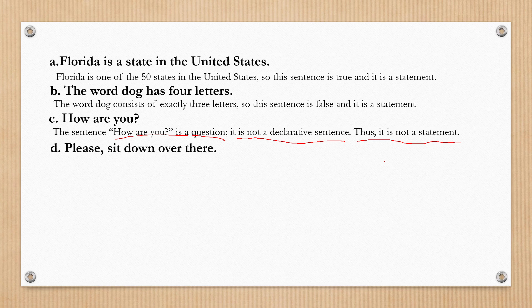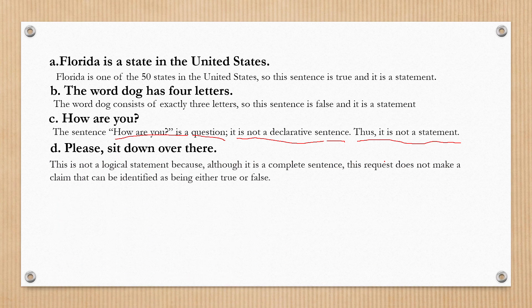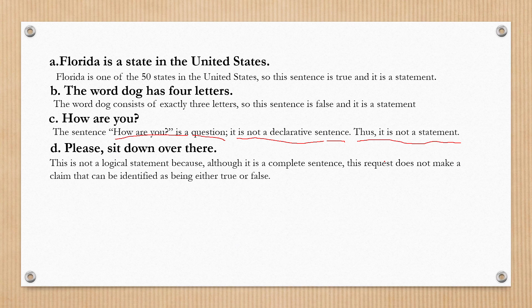Letter D: 'Please sit down over there.' This is not a logical statement because, although it is a complete sentence, this request does not make a claim that can be identified as being either true or false. Therefore, it does not qualify as a statement.